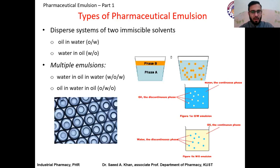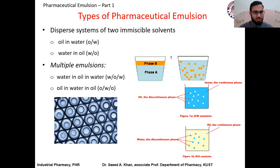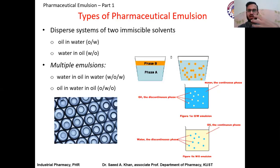Emulsion is a dispersed system, and a dispersed system is one which has two or more phases. In emulsion we have two phases: water and oil. One phase is dispersed in the other one — the one which is dispersed is called the dispersed phase, and the continuous phase is called the dispersion medium.